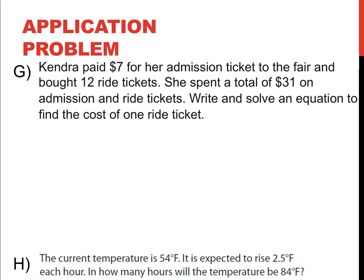And we're back. So, let's take a look at another application problem. Here, it's Kendra. She paid $7 for her admission ticket to the fair and bought 12 ride tickets. She spent a total of $31 on admission and ride tickets. So, we've got to figure out the cost of only one ride ticket. So, $7 was her admission and she bought 12 tickets. So, 7 + 12x = 31. Alright. So, the inverse of a positive number is subtracting. So, I've got subtract 7 from each side. That gives us 12x = 24. And the inverse of multiplication is division. So, divide each side by 12. And each ride ticket costs 24 divided by 12 or $2.